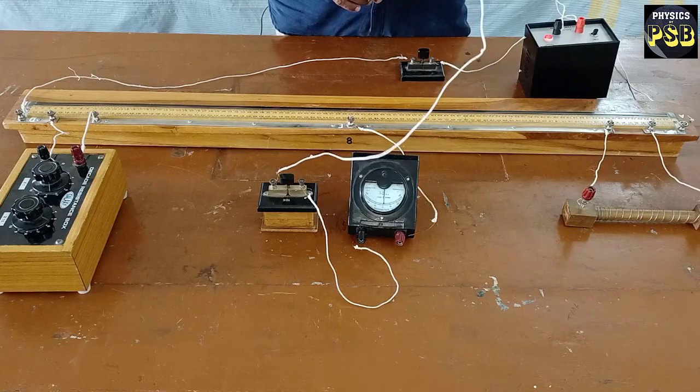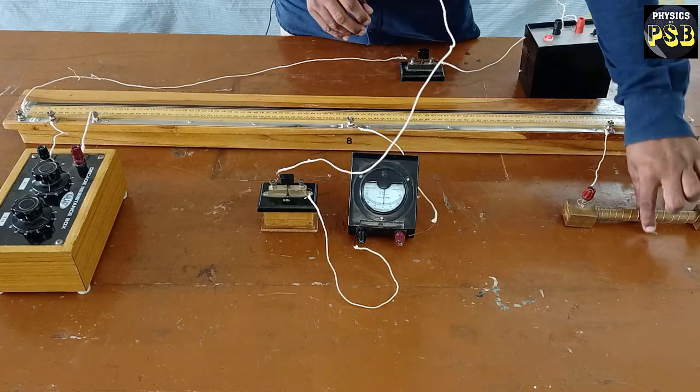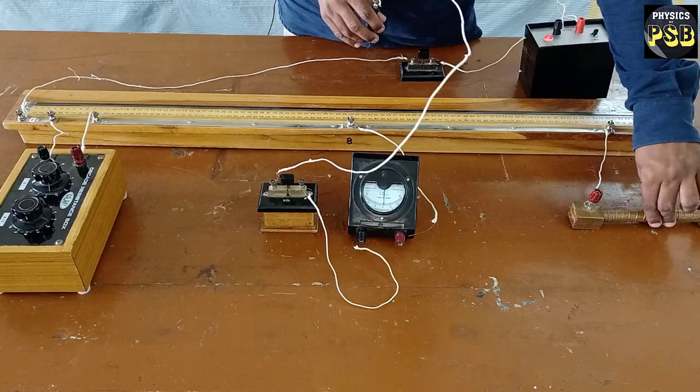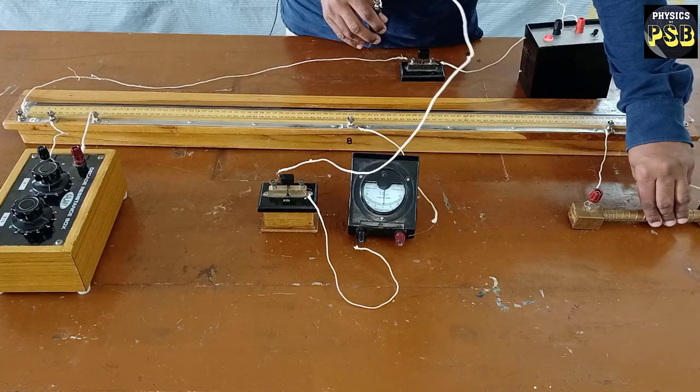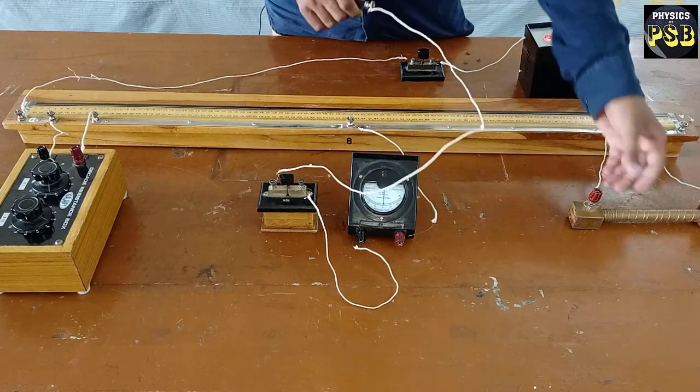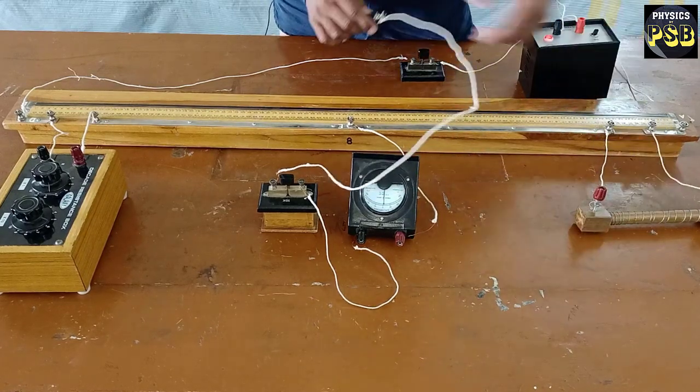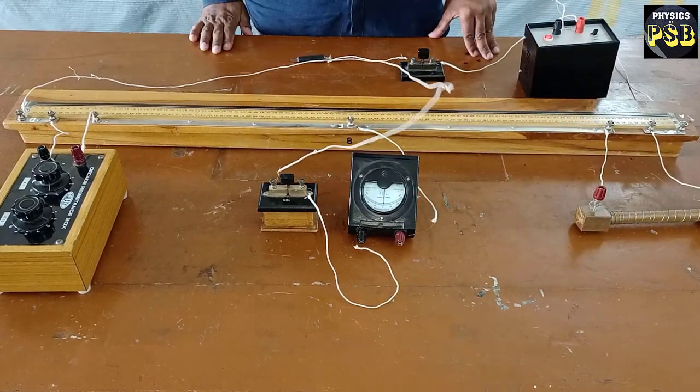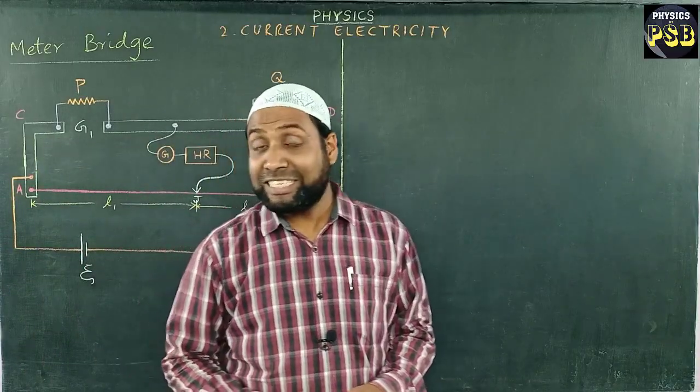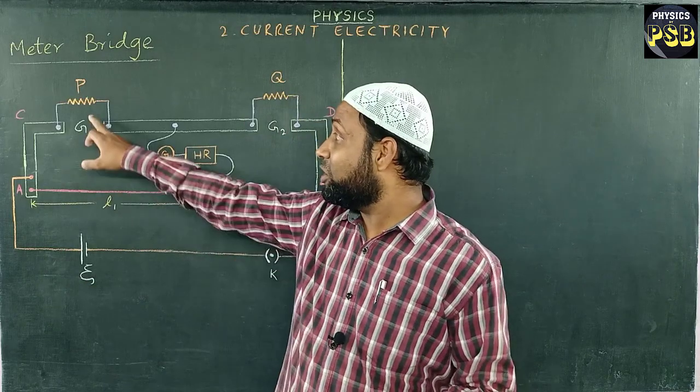This device can be used to find the resistance of an unknown resistor. This can also be used to find resistivity of a coil of wire. Let's find the expression for resistance and resistivity of the given coil of wire.